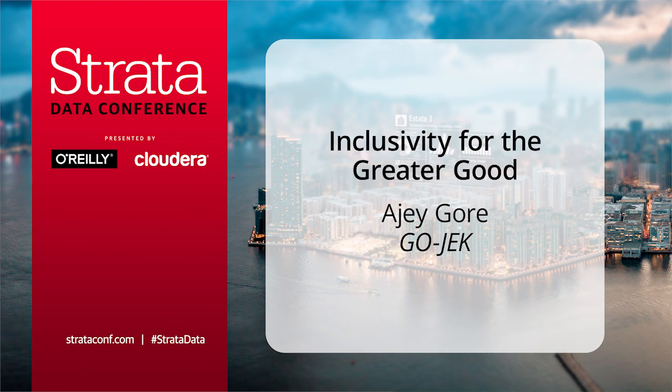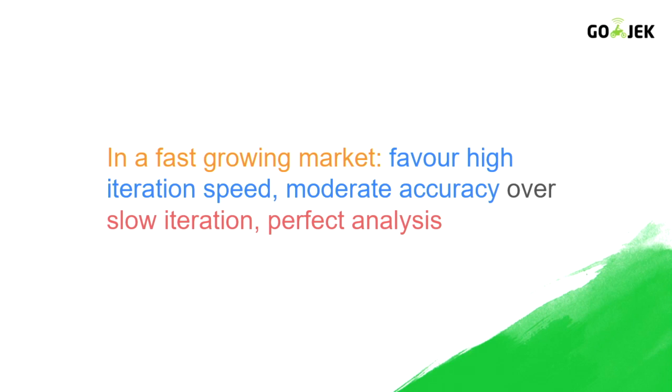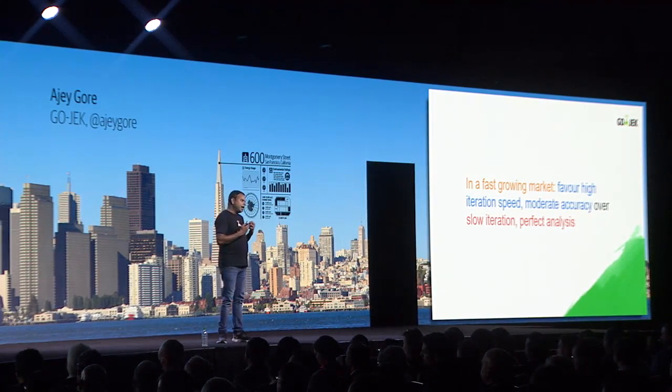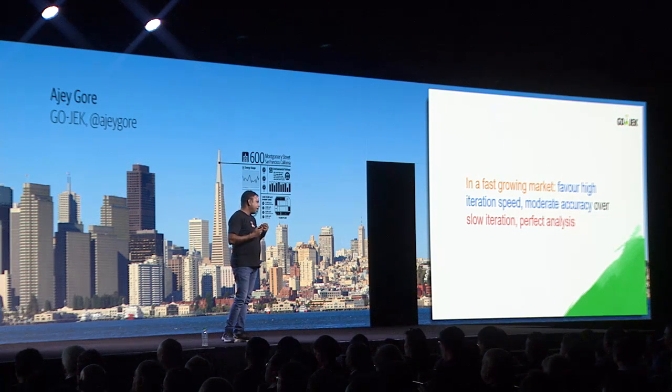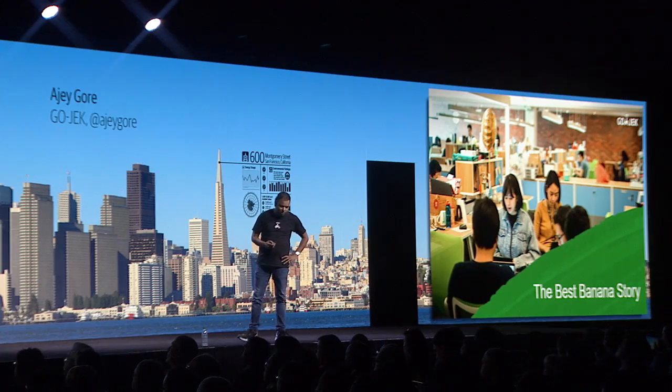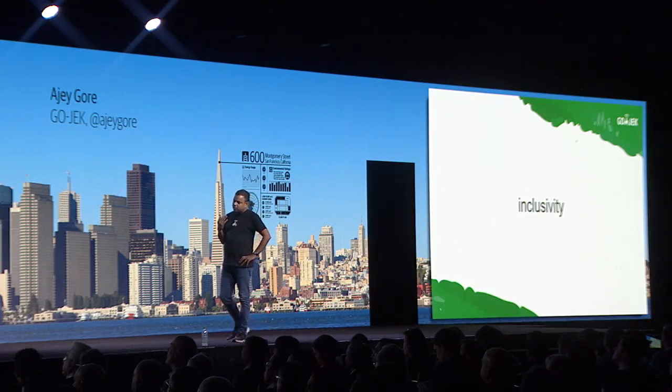I'm going to talk about two stories about inclusivity — what you do and what kind of amazing impact it can have when you actually open your platform. I call it the best banana story. Inclusivity is a very tough thing to do. It requires you to open your doors, let people into your platform, into your code, into your data. You have to open it up to everybody.